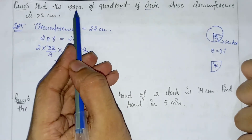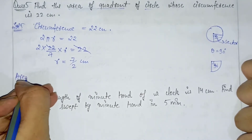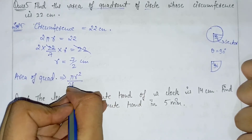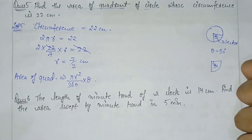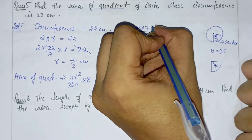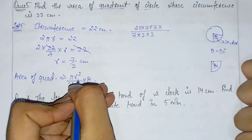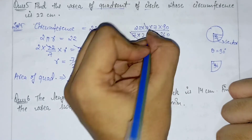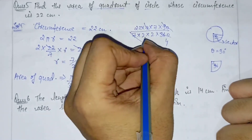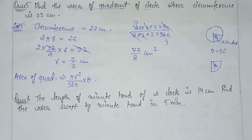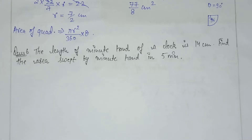Now we find the area of the quadrant using the sector area formula: πr²θ/360. Substituting r = 7/2 and θ = 90°: Area = (22/7) × (7/2)² × (90/360). Simplifying, the area comes out to 77/8 cm². So the area of the quadrant is 77/8 cm². Now question number 6.